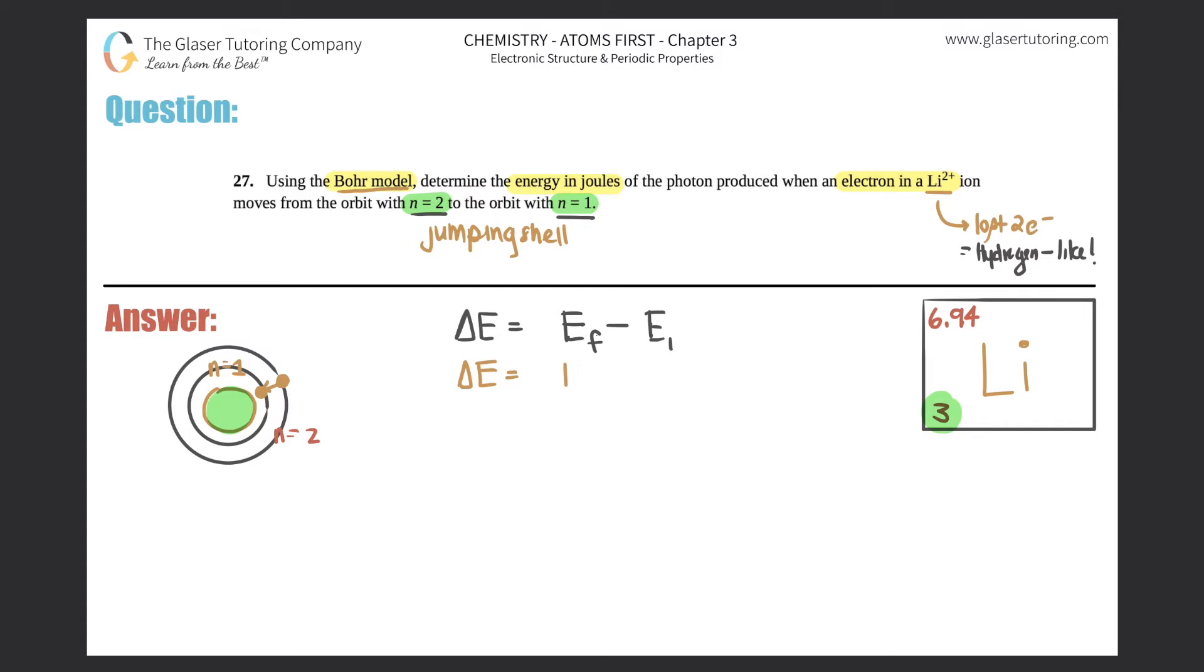That's how a change is always found out. It's always final minus initial. So I can say that my change in energy could be the energy found in the shell of the first shell minus the second shell energy.